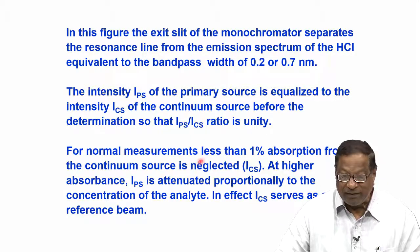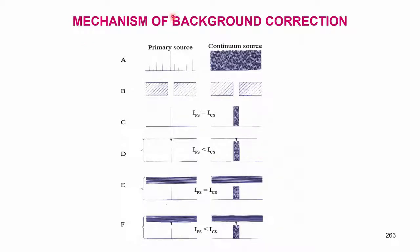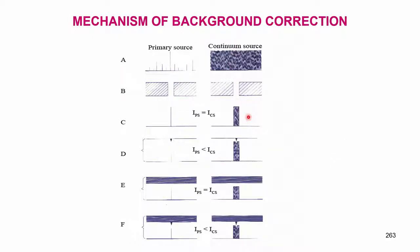For normal measurements, less than 1 percent absorption from the continuum source ICS is neglected. At higher absorbance, IPS is attenuated proportionally to the concentration of the analyte. If IPS is 5 percent, ICS is also adjusted to 5 percent, so that the analyte concentration is not affected by the background. In effect, ICS serves as a reference beam correction. I have shown two series here — one is the primary source and the other is the continuum source.